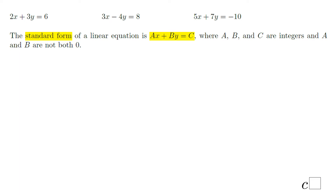Welcome, or welcome back, at C-Square. In this lesson we will talk about what is called the standard form of a linear equation. The standard form has both x and y on the same side — the left side. The coefficients, the number next to x and y, and c, the number on the other side, are integers. A and b are not both zero.